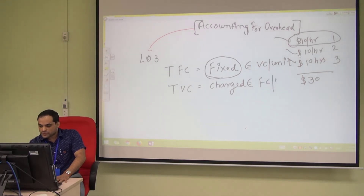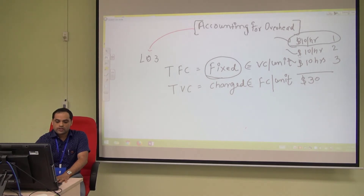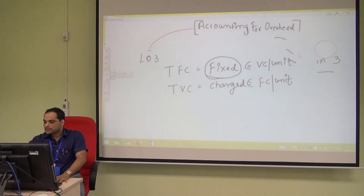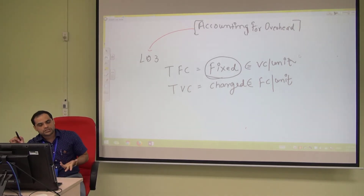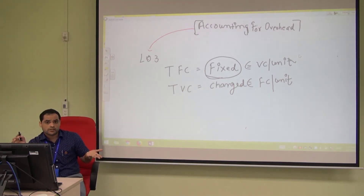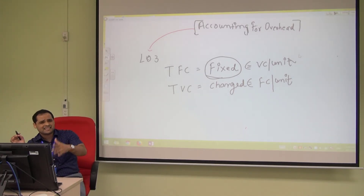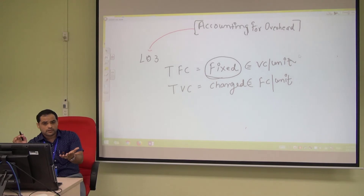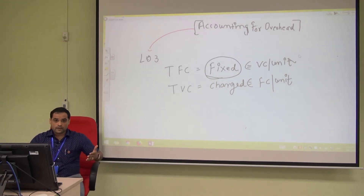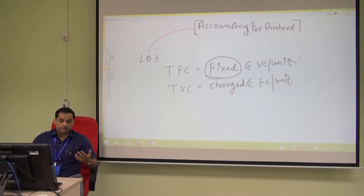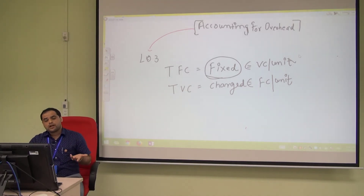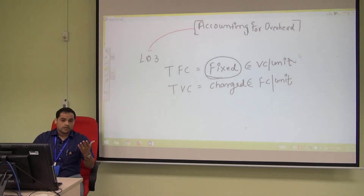The behavior of fixed cost per unit, however, does change. As you produce more products, the fixed cost per unit keeps reducing — similar to economies of scale. For a given level of fixed cost, you should maximize the number of products produced. The more products you produce, the lower the cost per product.